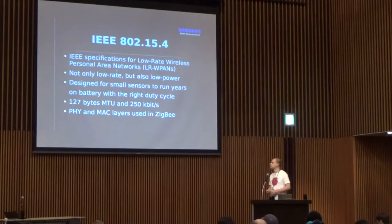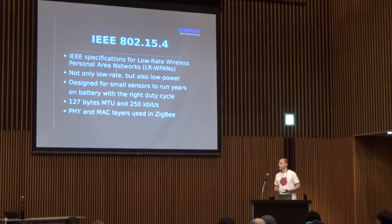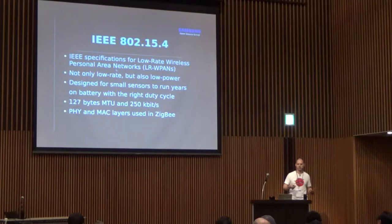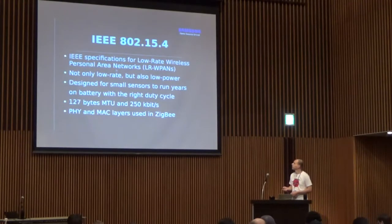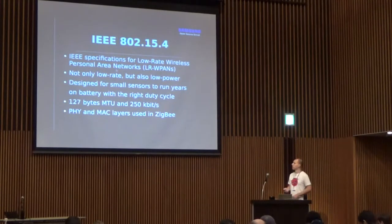What is 802.15.4? It's a specification from IEEE designed for low-rate wireless networks — but not only low-rate, also low-power. It was designed for really small sensors: a microcontroller with a wireless transceiver, both running on a coin cell battery for some years, depending on the correct duty cycle. That was one of the main design goals.